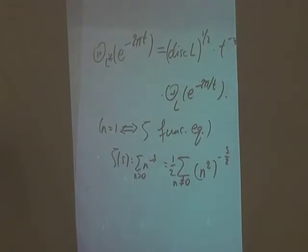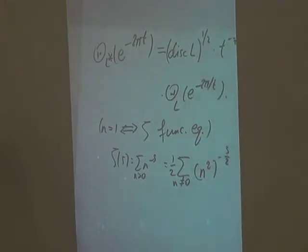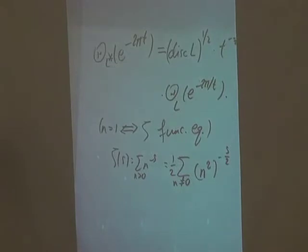I should have perhaps mentioned at the beginning — there are two kinds of theta functions in the literature. There's this one, and there are Jacobi theta functions, and they are related to each other. If I let L be a one-dimensional lattice and twiddle my theta function a bit, I recover Jacobi theta functions, but mostly I'm not going to be talking about Jacobi theta functions. This will be the only kind of theta function and its generalizations that I work with.